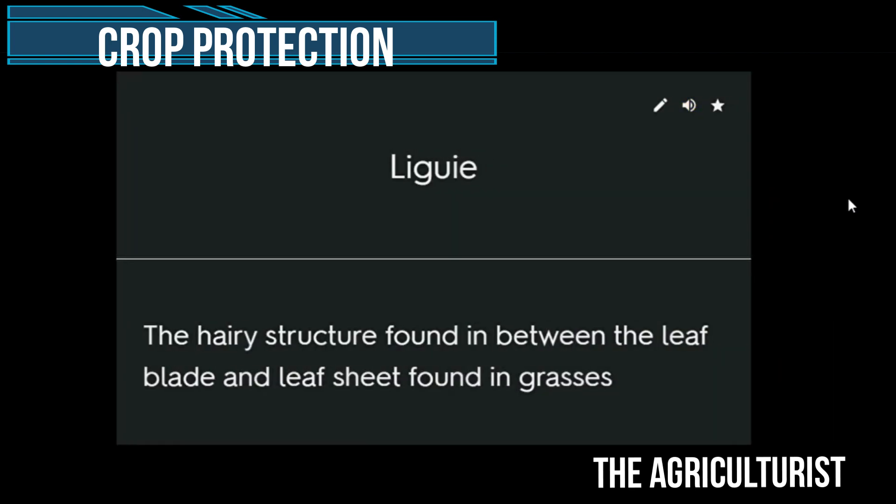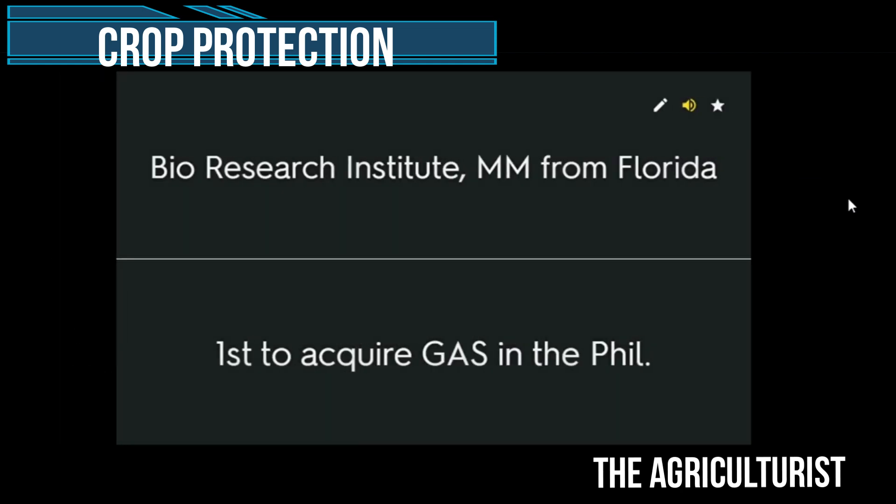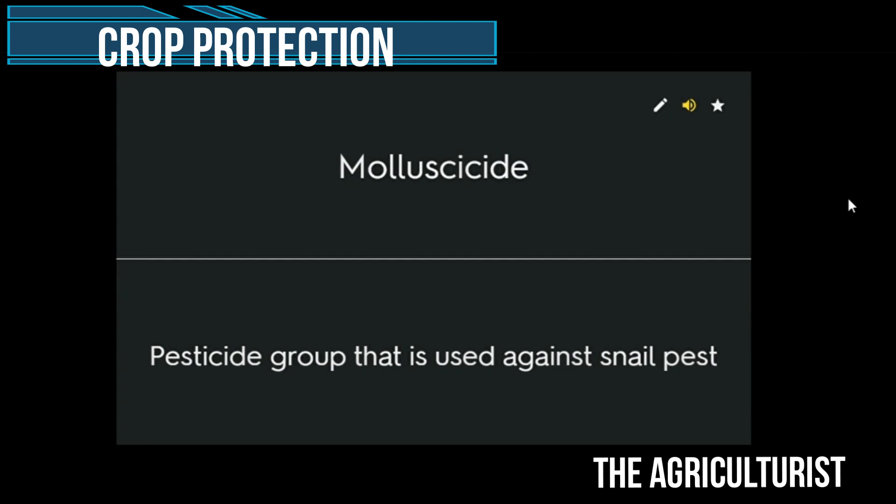Ligule — the hairy structure found between the leaf blade and leaf sheath found in grasses. Bioethics Research Institute from Florida — first to acquire GAS in the field. Molluscicide — pesticide group used against snail pests.